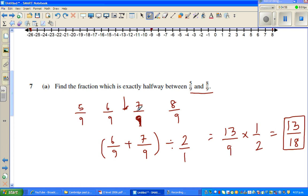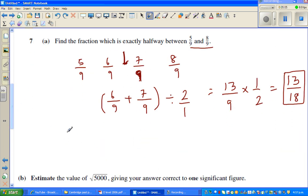So this is 5/9, 6/9, 7/9, 8/9. So you want to find halfway. How can you do it in a different way? I'll do one more way. You can also go like this: 5/9 plus 8/9 divided by 2.